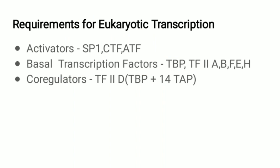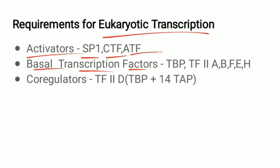For eukaryotic transcription to occur, certain requirements must be met. Activators bind to enhancers — DNA regions — and increase the rate of transcription. The activators include SP1, CTF, and ATF. Basal transcription factors include the TATA-binding protein and transcription factors 2A, 2B, 2F, 2E, and 2H. The core regulators consist of transcription factor 2D, which is composed of TATA-binding protein plus 14 transcription-associated proteins.